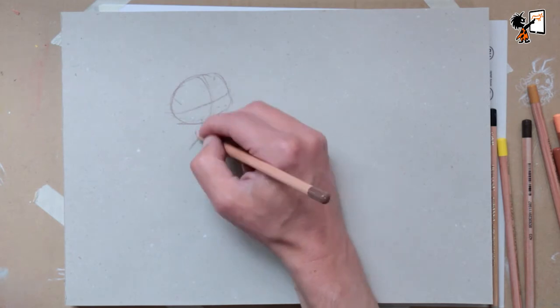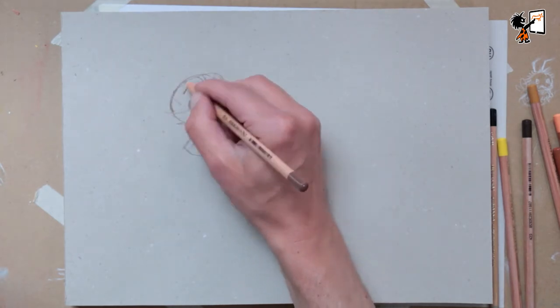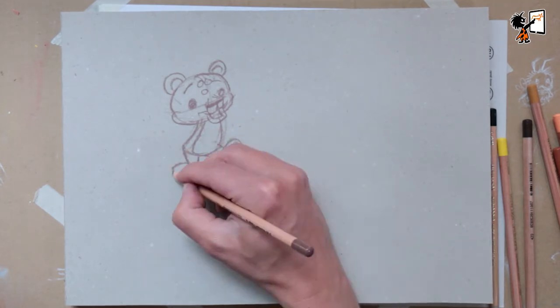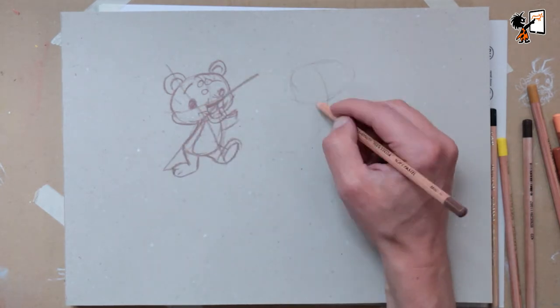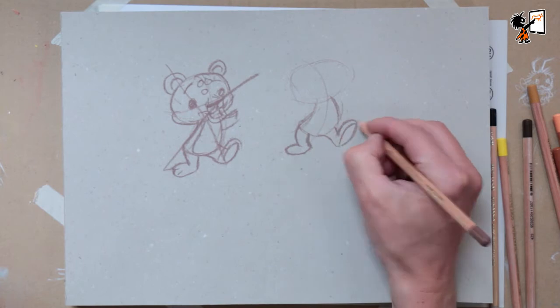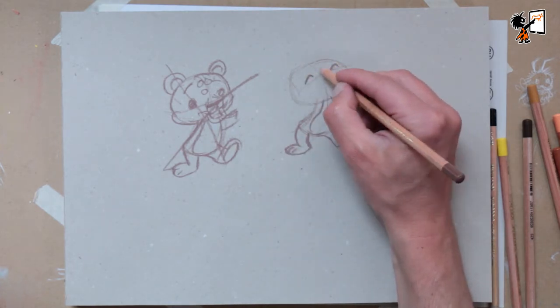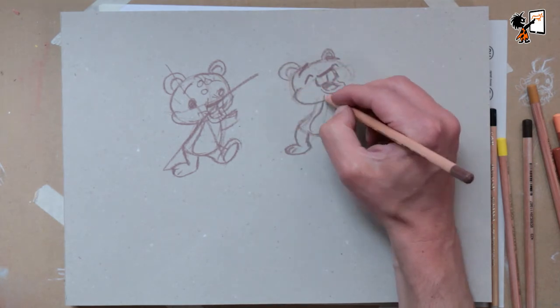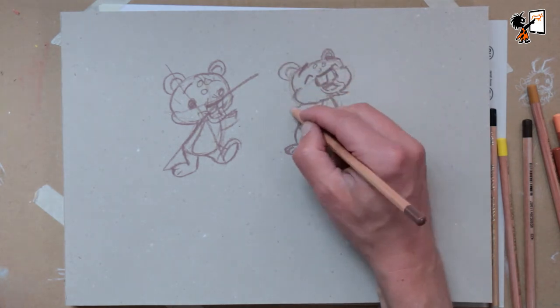Tip number five. When you're drawing or sketching, don't be afraid to make mistakes. It's okay because you can always start a new drawing and you learn from your mistakes. So keep on sketching and drawing until you're satisfied with the end result.